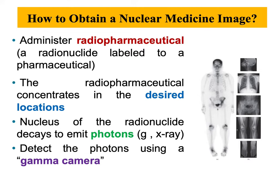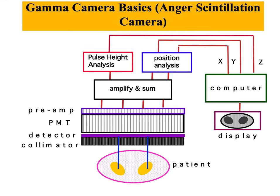The gamma camera consists of the following: it has a multi-hole lead collimator, and it has also a 10 to 25 inch circular, square, or rectangular sodium iodide scintillation crystal. It also has an array of photomultiplier tubes on the crystal, then a positioning logic network, pulse height analyzer, gating circuit, and a computer — as shown in the figure here. I will be talking about the functionality of each of these components in this video and in subsequent videos as well.